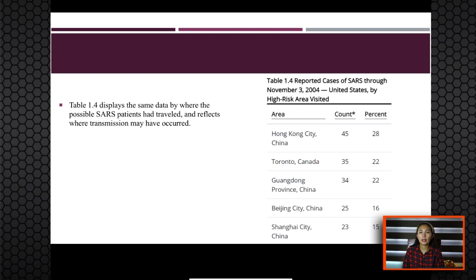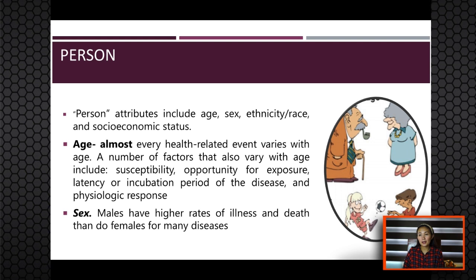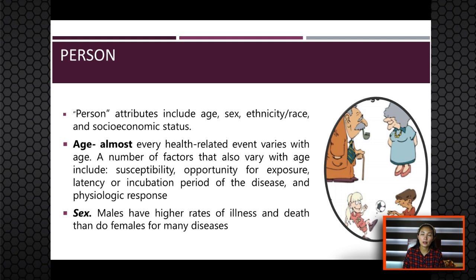The next focus is on the person. Since personal characteristics may affect illness or the susceptibility of a person to contract a disease, inherent characteristics of a person must be considered when organizing and analyzing data. When we speak of person, we mean the attributes including age, sex, ethnicity, race, socioeconomic status, and so on. The single most important personal attribute that epidemiologists should consider is age, because almost every health-related event varies with age.